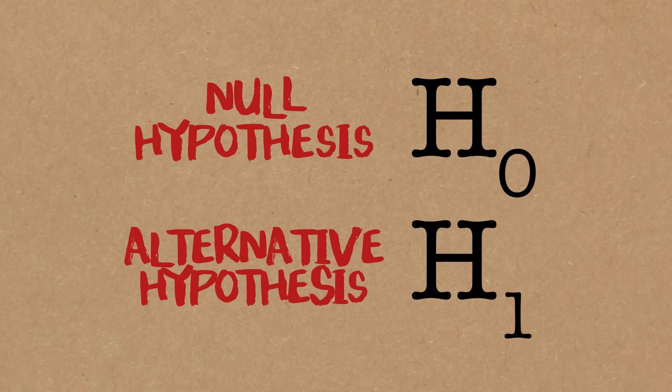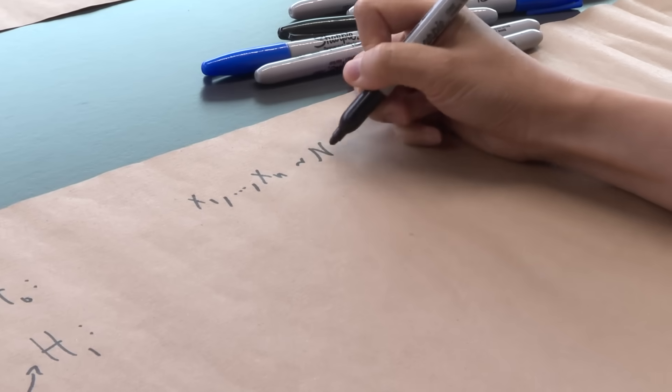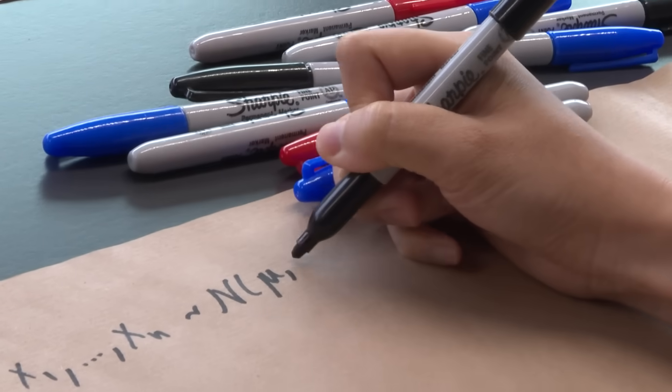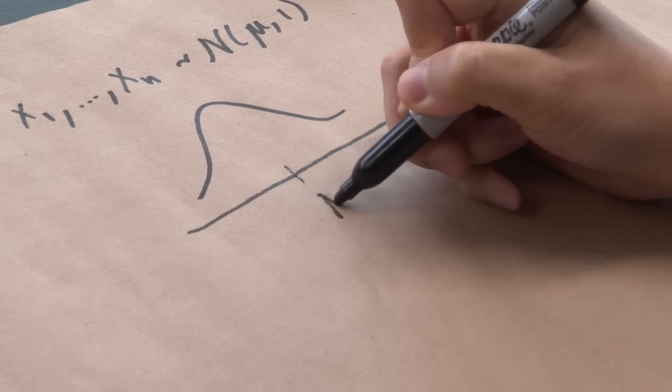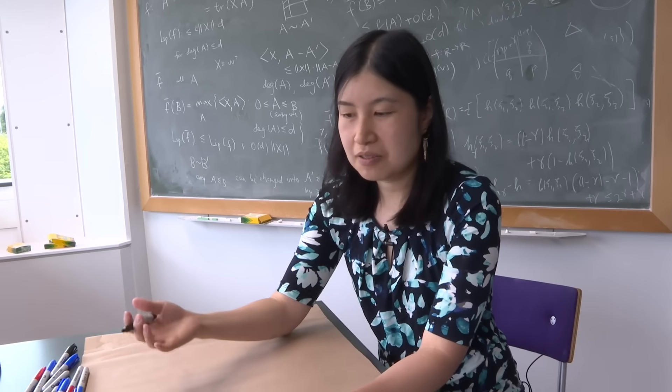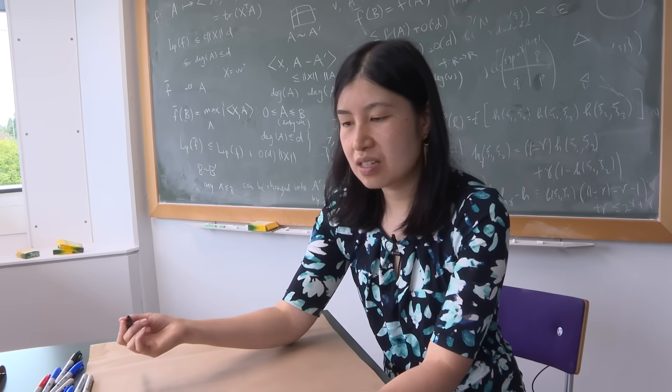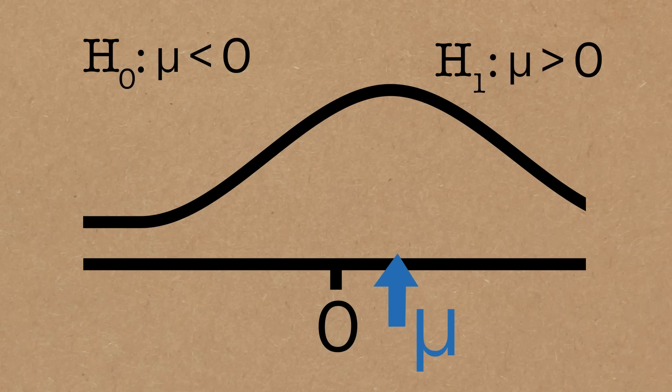The way that this is usually framed, you have data, maybe some data samples x1 up to xn, and they come from some distribution. Maybe your distribution is normal with mean mu and variance 1. So if you draw the density function of your data from which it's sampled, then the distribution is centered around mu, but you don't know what that is.